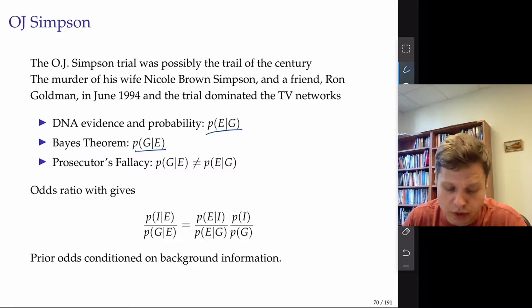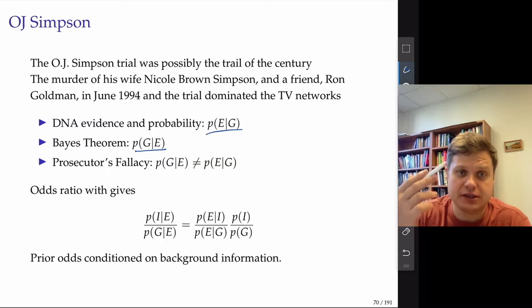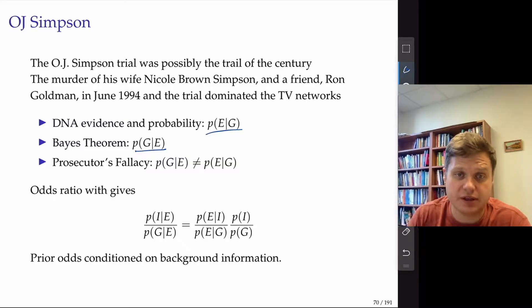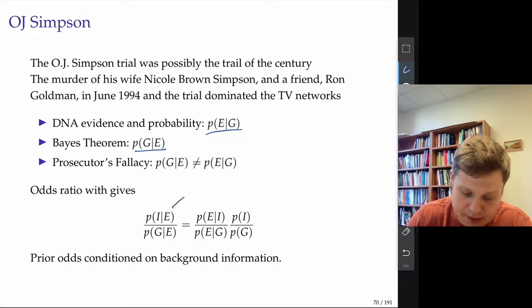What we're going to do is calculate the odds ratios — the ratio of innocent to guilty given the evidence. This is our posterior odds.